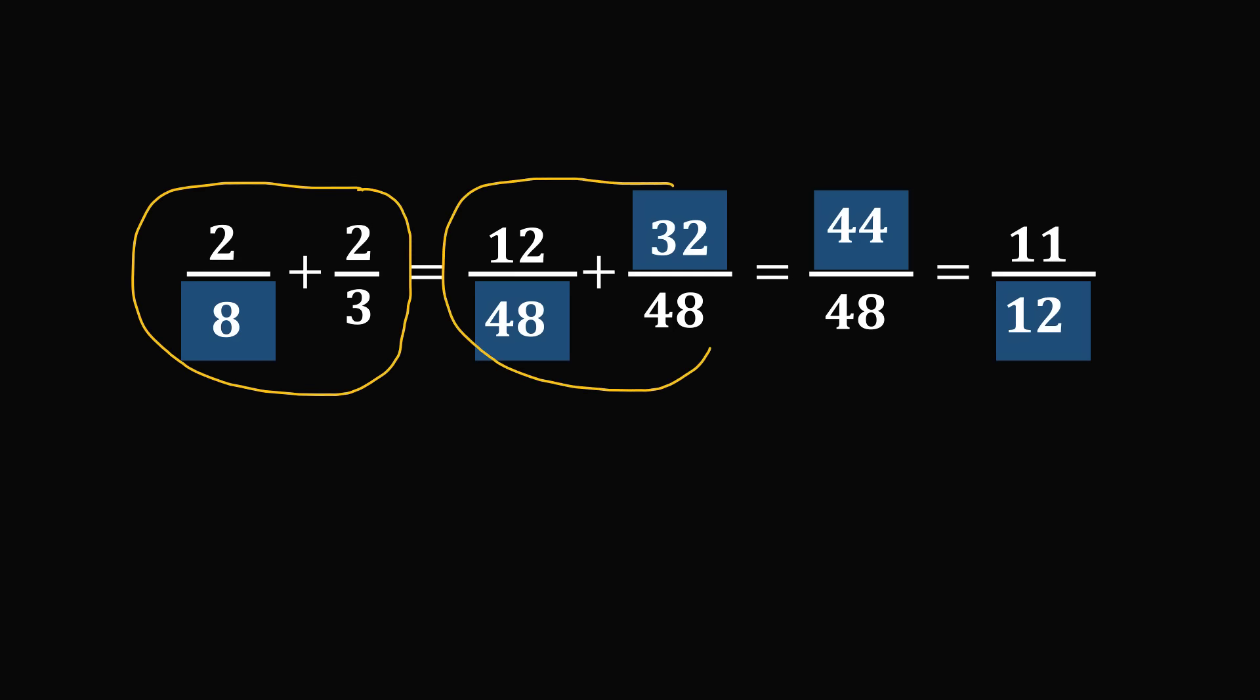We have 2 over 8 plus 2 over 3, and this is equal to 12 over 48 plus 32 over 48. Is this the normal way you would add 2 over 8 plus 2 over 3? No.